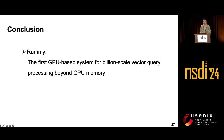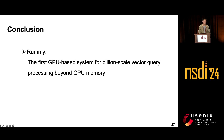In conclusion, RAMI is the first GPU-based system for vector query beyond GPU memory. It focuses on system design and is orthogonal to algorithm optimization. Existing databases can integrate RAMI with their own ANN indices to expand limited GPU memory. Thank you for listening. I'm ready for questions.